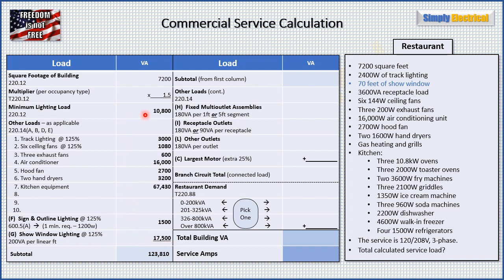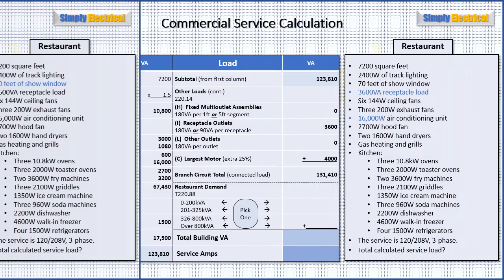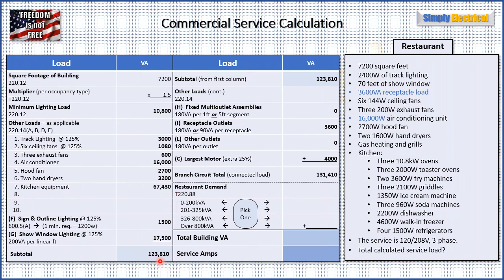Now we add all the bold numbers together and get 123,810 VA. We slide that subtotal up to the top of this column and continue with our other loads. Moving to H — fixed multi-outlet assemblies — we don't have any in our example. Then I, reciprocal outlets: we have 3,600 VA of reciprocal loads. Other outlets — none.